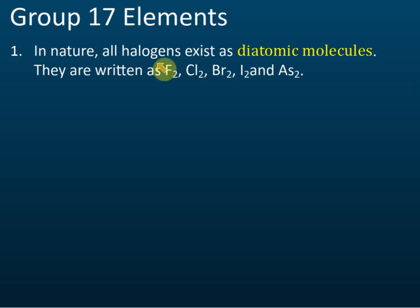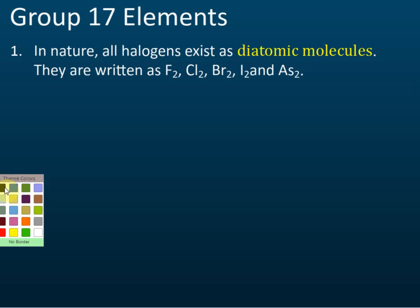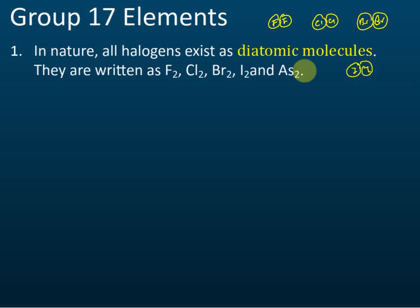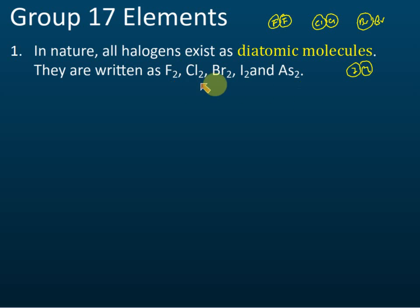Another thing to note about group 17 elements: in nature, halogens exist as diatomic molecules, meaning the atoms combine together to form a molecule of two atoms. For example, two fluorine atoms combine together, chlorine combines with another chlorine, bromine with another bromine, and iodine with iodine. They are all diatomic molecules — 'di' means two, so diatomic means two atoms.